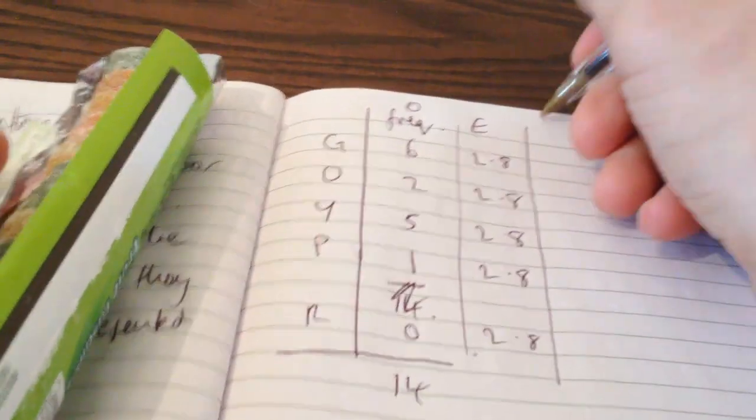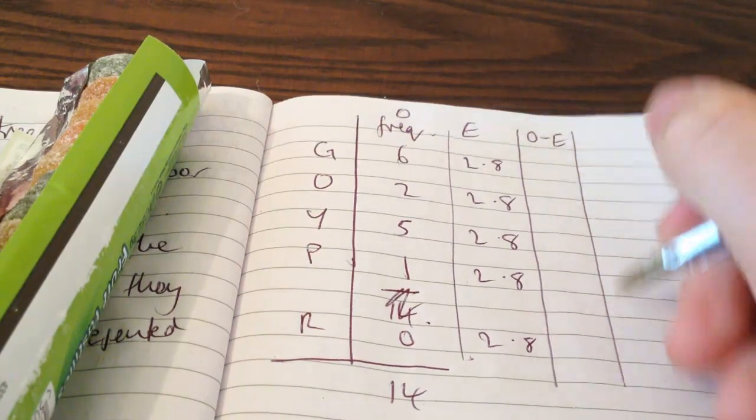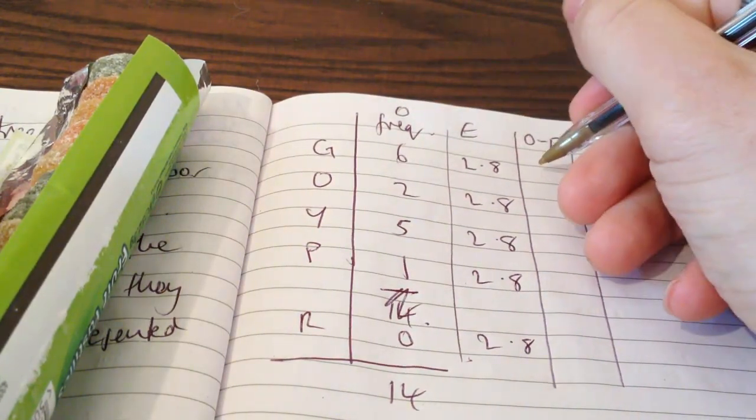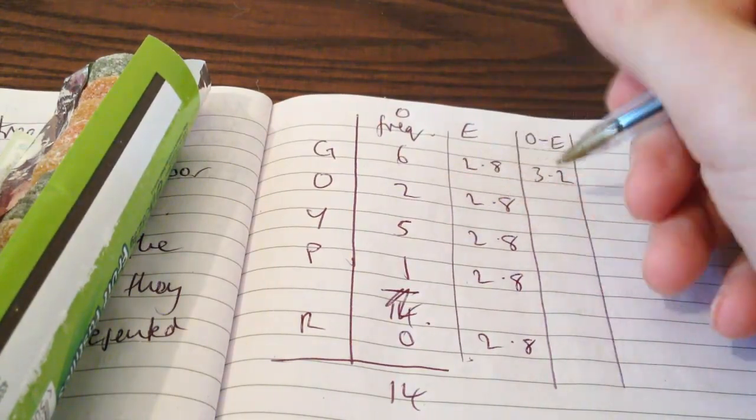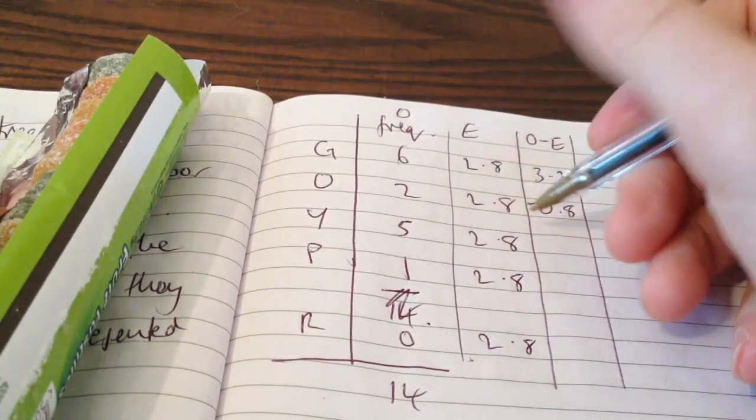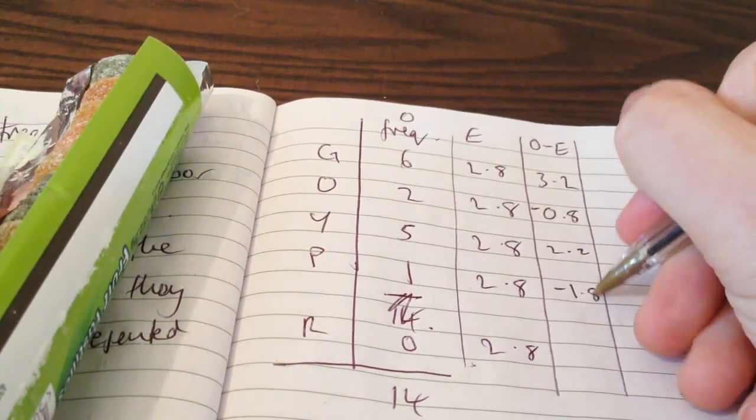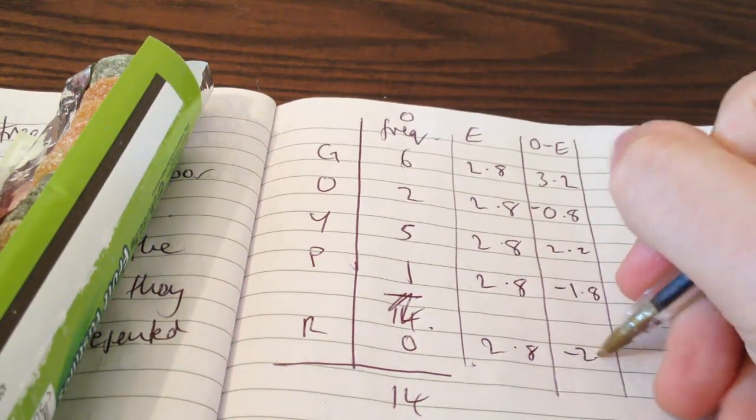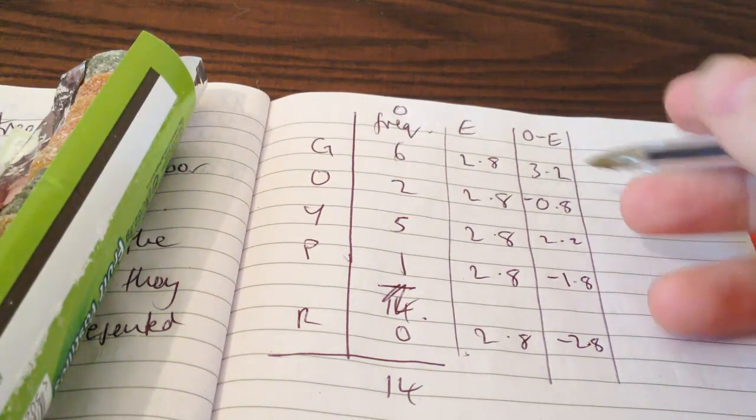And I'm going to look how far away was what I saw from what I would expect. So I'm going to do my observed minus my expected. So six minus two point eight. Two minus two point eight is minus nought point eight. Two point two here. Minus one point eight, and that's going to be minus two point eight. That's a long way off of what I expected that one. That's actually a long way above what I expected.